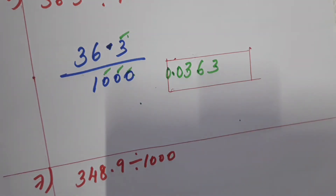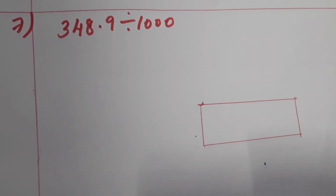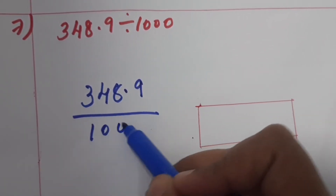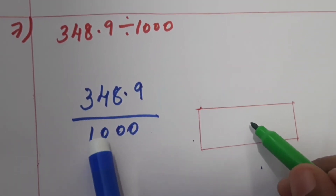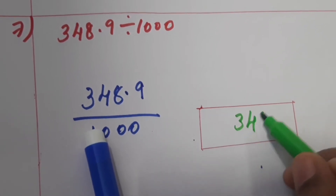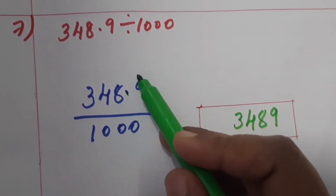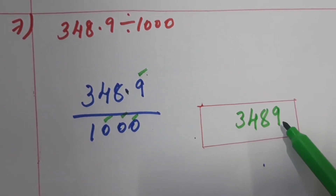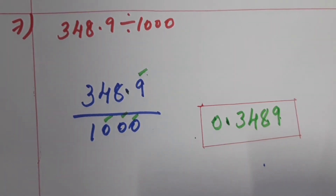Now the seventh question: 348.9 divided by 1000. Write it in fraction form, then write the answer directly. Write the number 3489 without the decimal point. After the decimal point there is one digit, and the denominator has three zeros — total four digits. After four digits from the right place the decimal point. The answer is 0.3489.